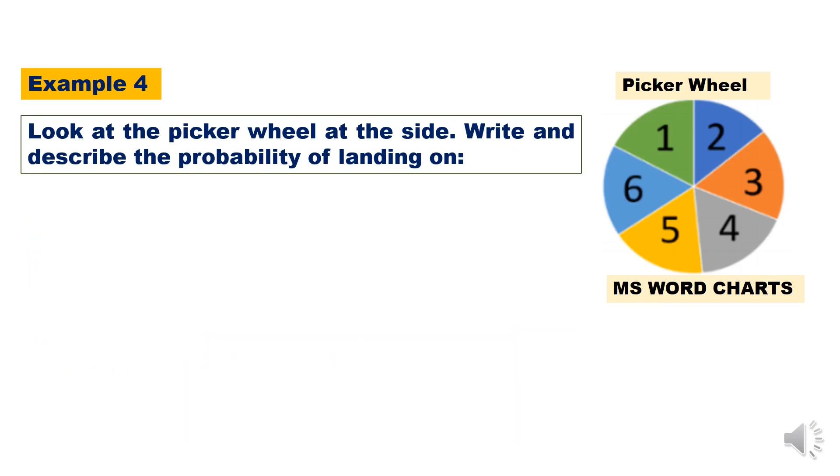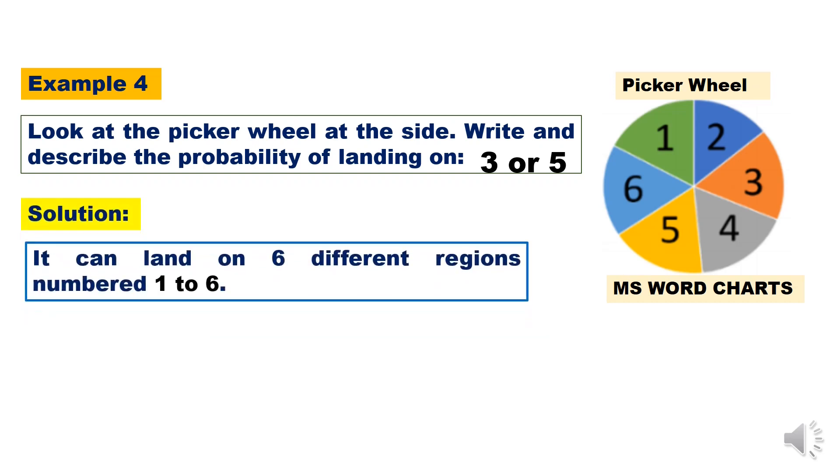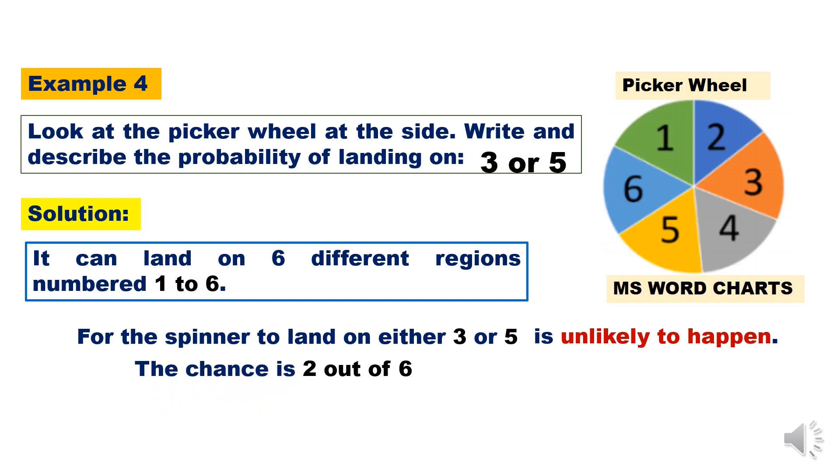Write and describe the probability of landing on 3 or 5. It can land on 6 different regions. For the spinner to land on either 3 or 5 is unlikely to happen. The chance is 2 out of 6, or 1 over 3, or 33.33%.